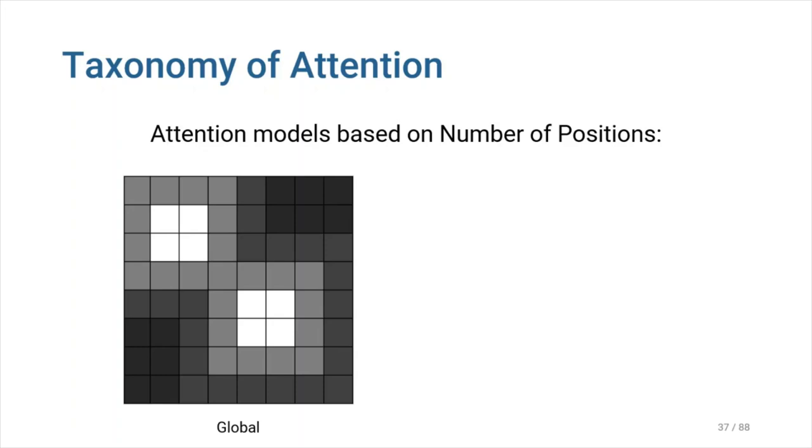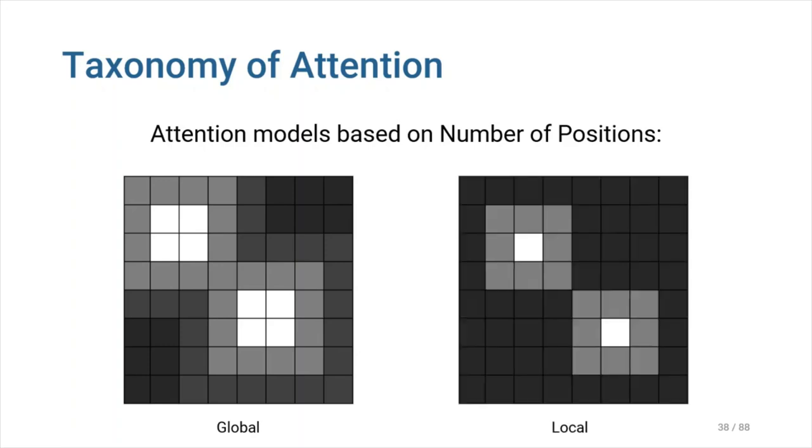Long and co-authors proposed the global and local attention. The global attention is similar to the soft attention. The local attention model, on the other hand, is an intermediate between soft and hard attention. The key idea is to first detect an attention point or position within the input sequence and pick a window around that position to create a local soft attention model. The advantage of local attention is that it has computational efficiency and differentiability within the window.